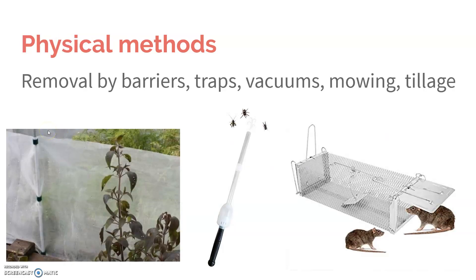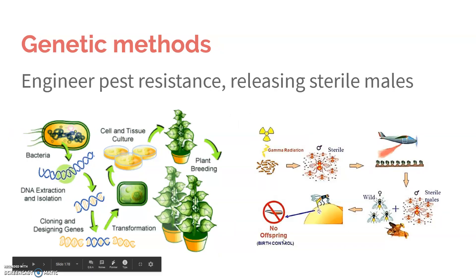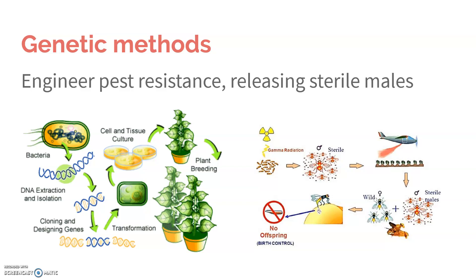Physical methods involve physically removing the pest either through barriers, traps, vacuums, mowing, or tillage. Genetic methods go along with biological — you can engineer pest resistance by putting genes into the crop that make it naturally resistant to that pest.